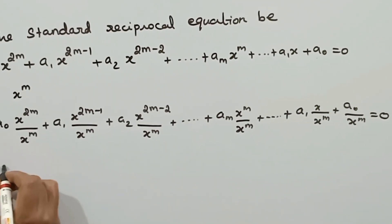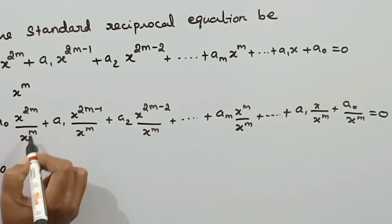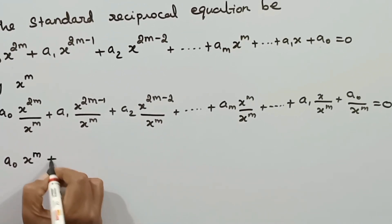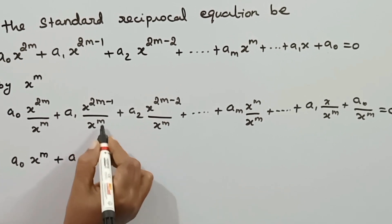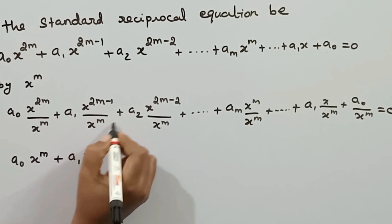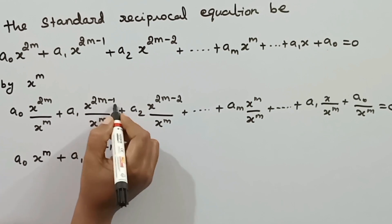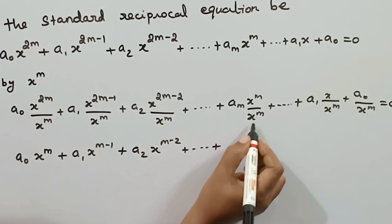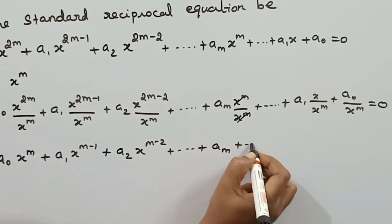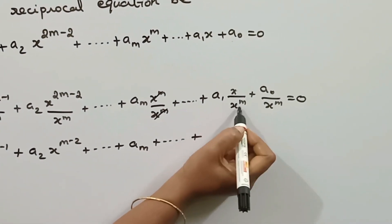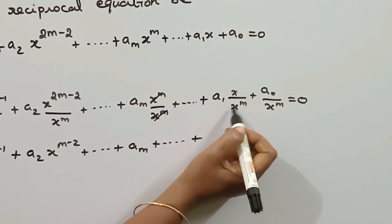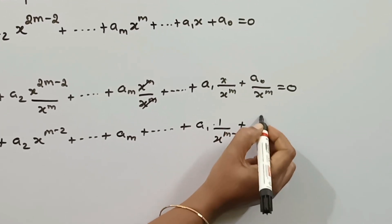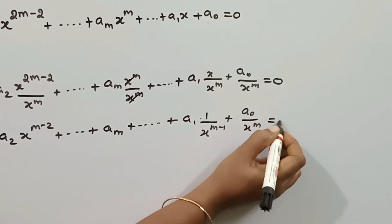Now we will solve this equation. After simplifying the powers, 2m − m = m, so we get: a0·x^m + a1·x^(m−1) + a2·x^(m−2) + ... + a_m + ... + a1·(1/x^(m−1)) + a0·(1/x^m) = 0.